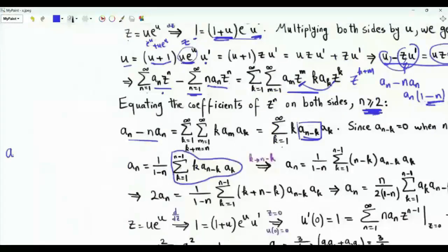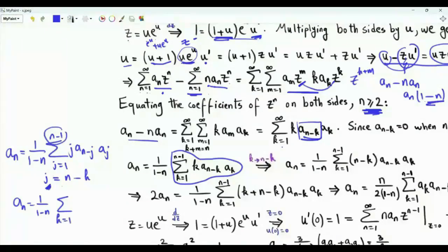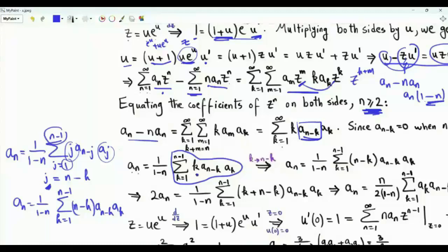We currently have that Aₙ equals 1 over (1 − n) times summation k from 1 to n − 1 of k·Aₖ·A_(n−k). Let's do a change of summation index: j equals n − k. When j equals n − 1, k equals 1; when j equals 1, k equals n − 1. Then A_j becomes A_(n−k) and A_(n−j) becomes Aₖ. So Aₙ equals 1 over (1 − n) times this sum, which can also be written with the index reversed.